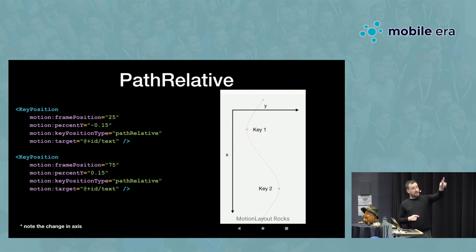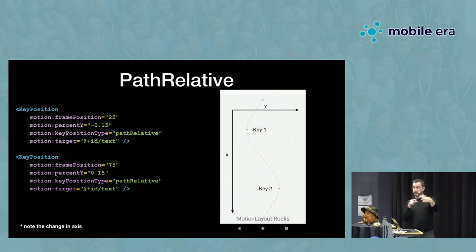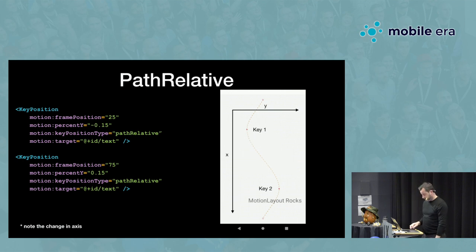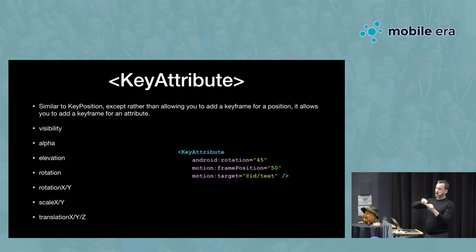And finally, PathRelative — the axis has changed given the coordinate system goes from top to bottom. The X axis is now pointing down, the Y axis is going across. At 25% and 75% we're moving in the Y axis, which is why it gives us that strange effect where you're using Y but it's going sideways — because the axis has changed.